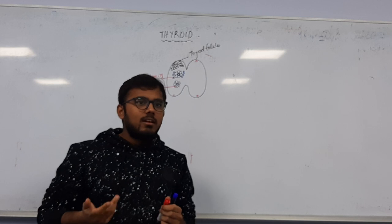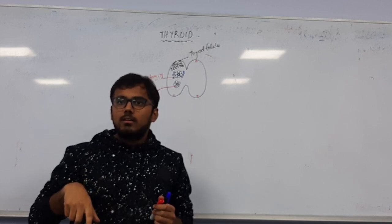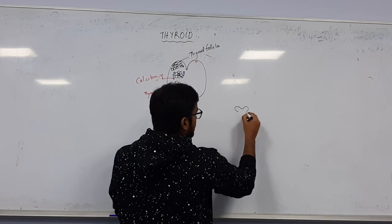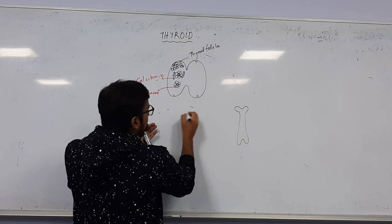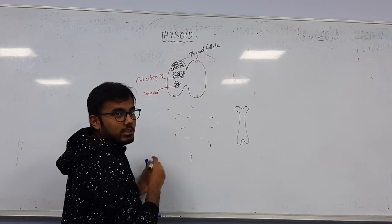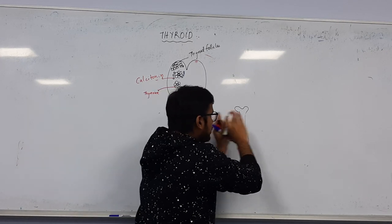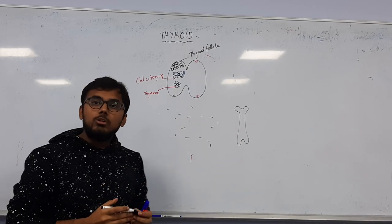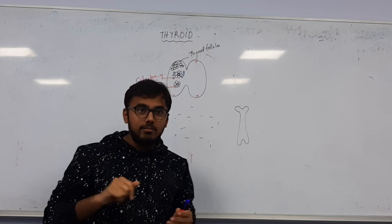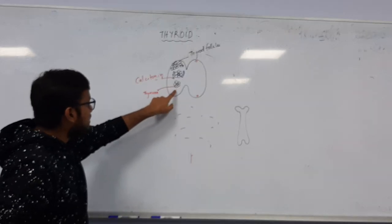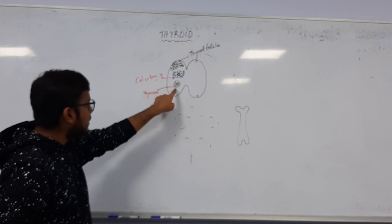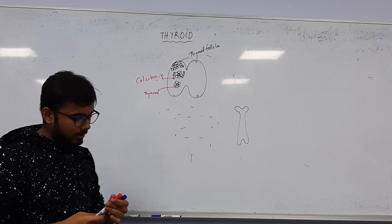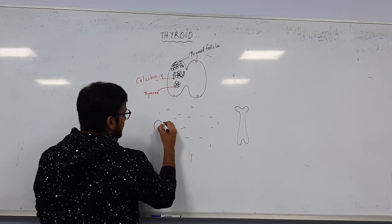Calcitonin, when released, takes calcium from the blood and deposits it onto the bone, thereby lowering blood calcium levels - hence it is called a calcium-lowering hormone. Our main discussion is thyroxin: how it is synthesized in the follicular cells and how it is released.